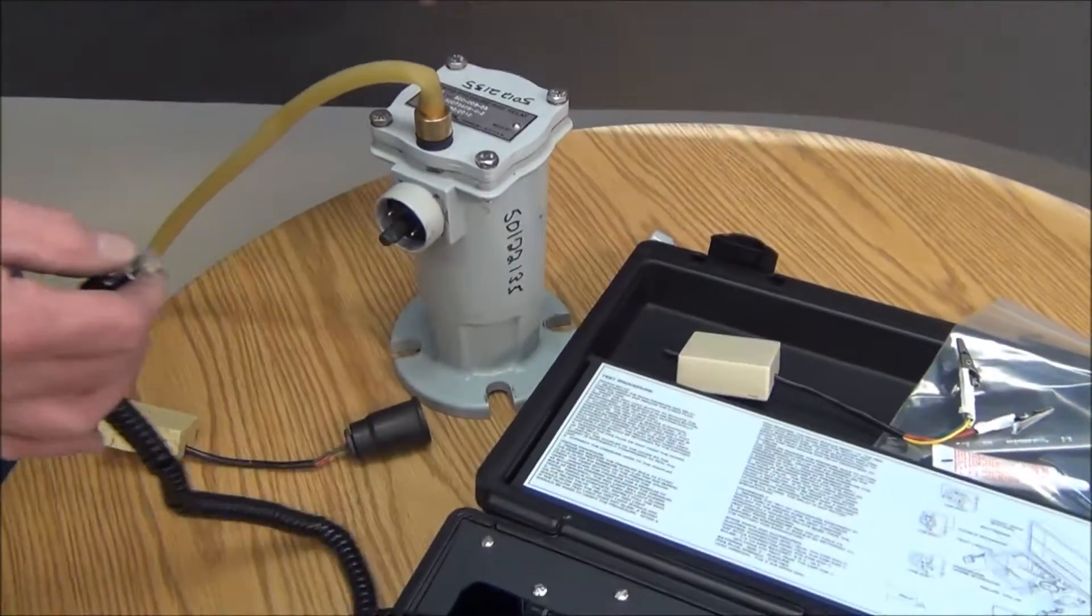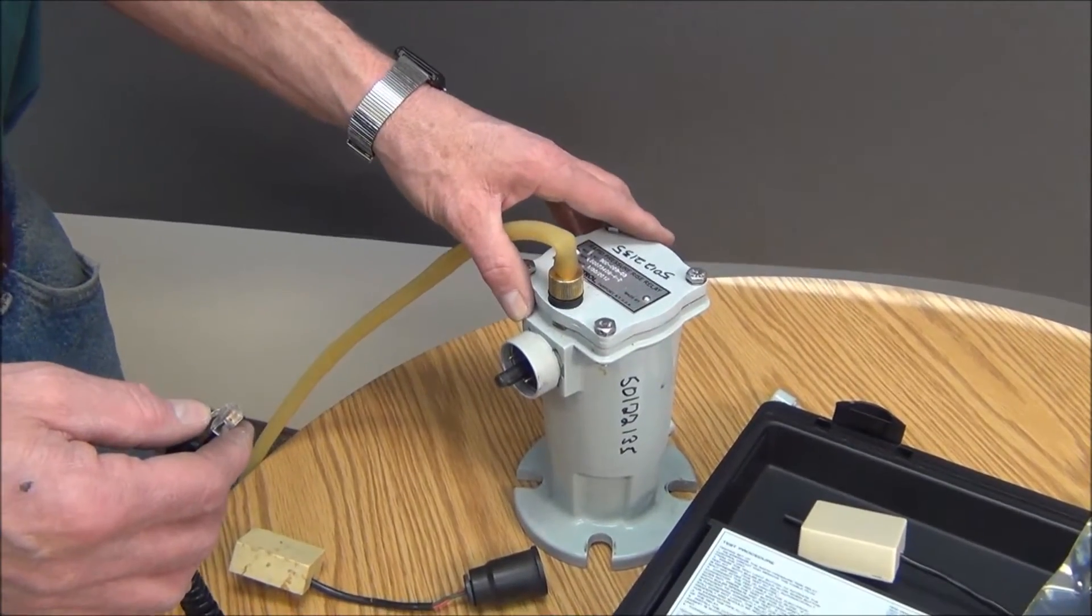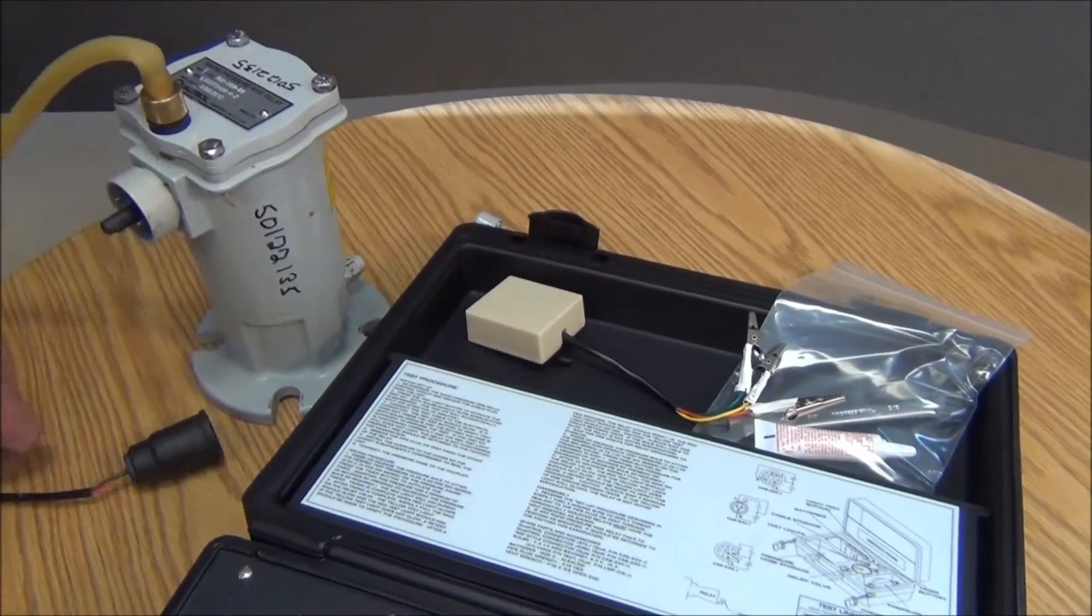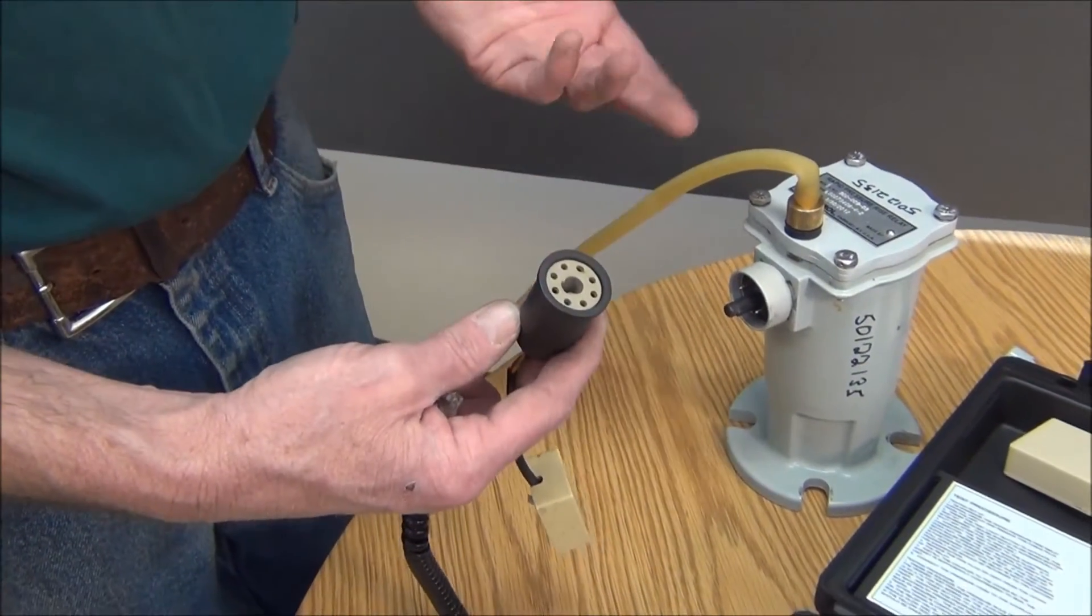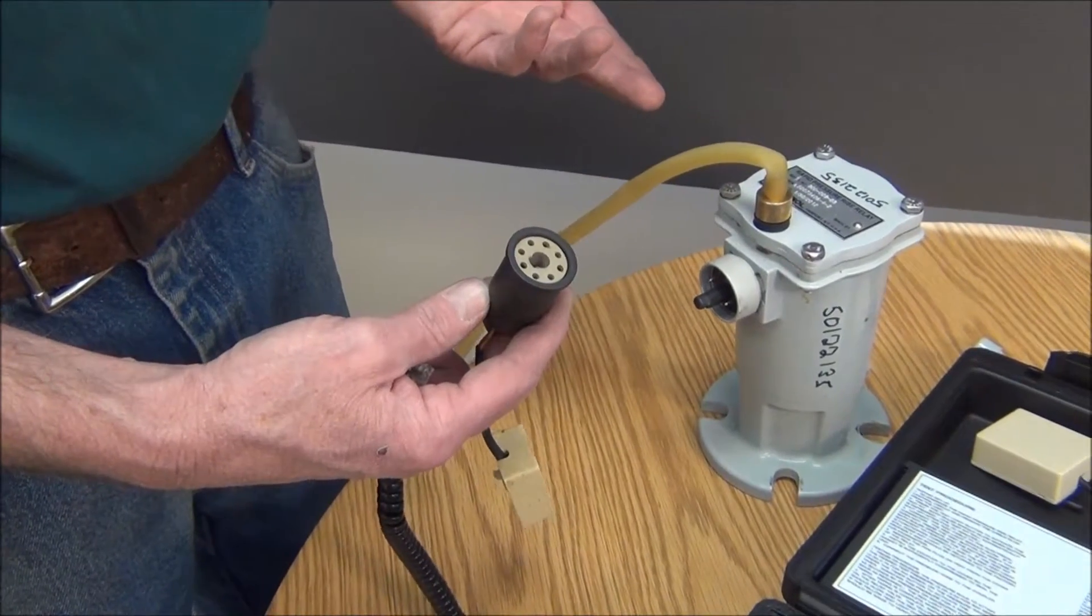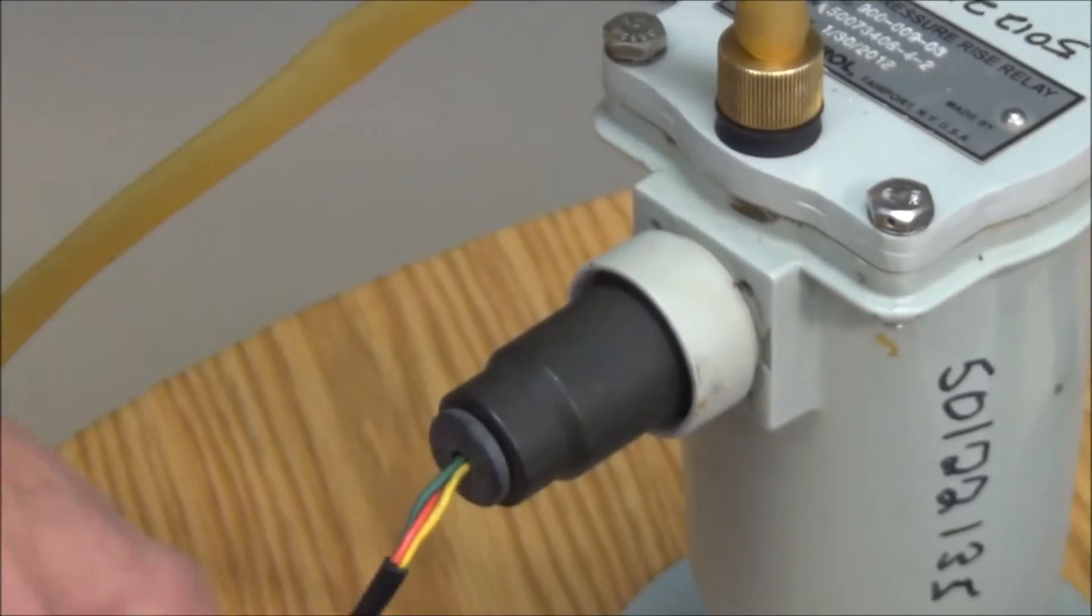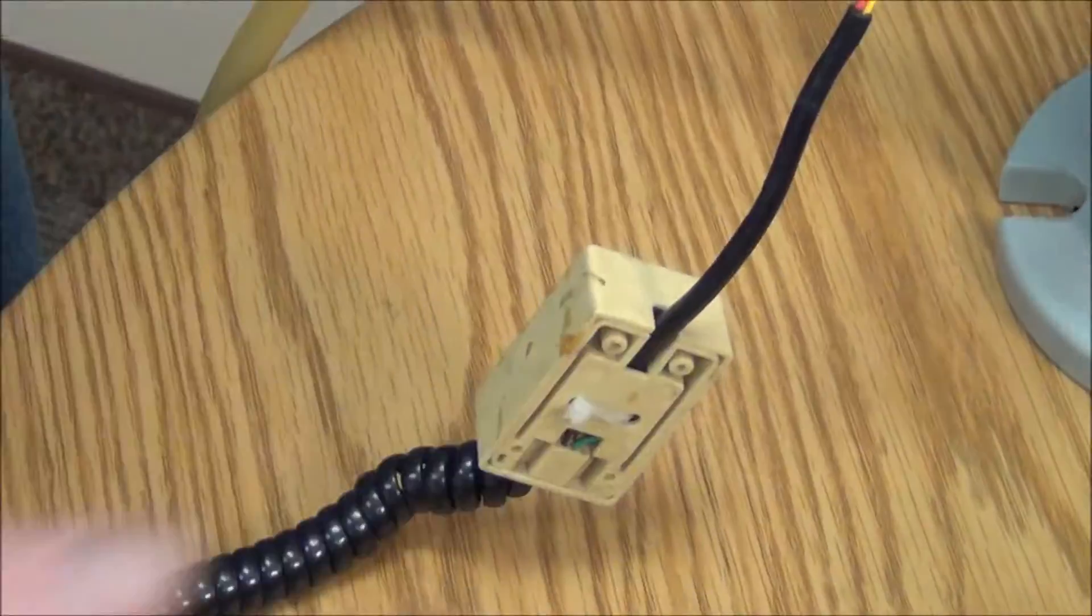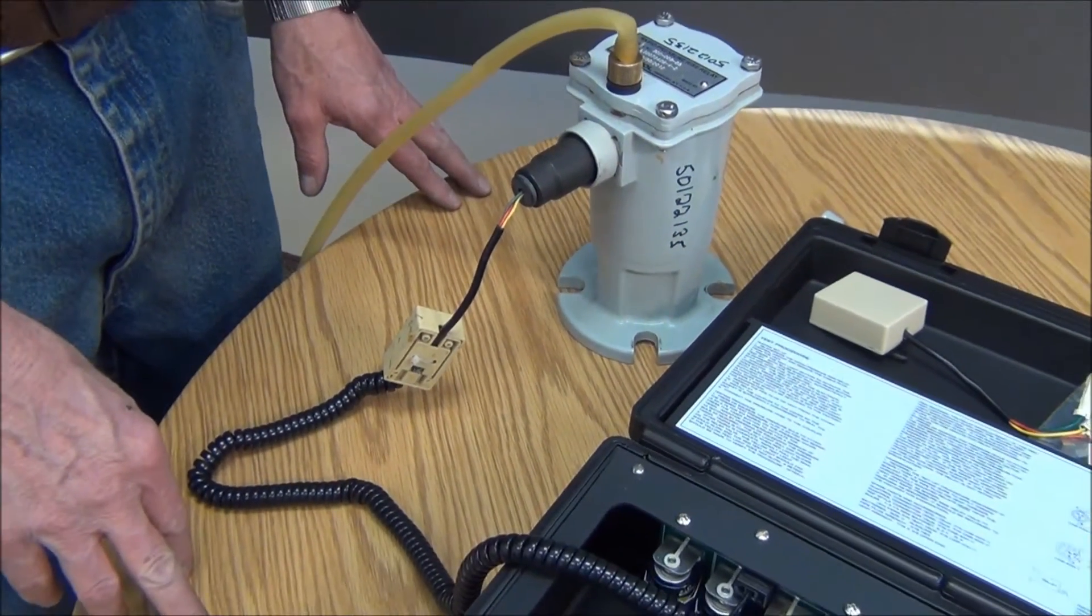This happens to be a 900 unit for an oil-filled transformer. We also sell units with different configurations for Qualitrol style ANSI, Bendix connectors. This happens to be a Qualitrol style. I'm just going to plug my electrical hookup into that, but you can use the alligator clips on any of the pins. The wiring scheme will tell you how to hook them up.